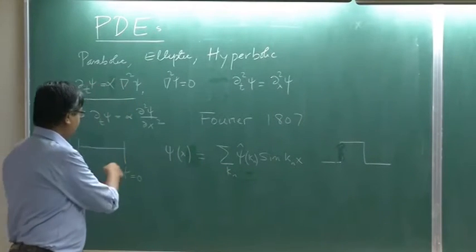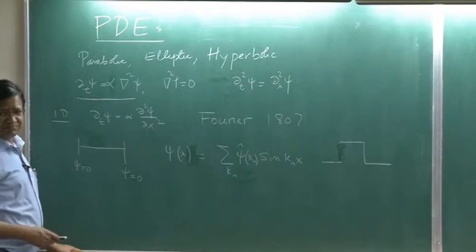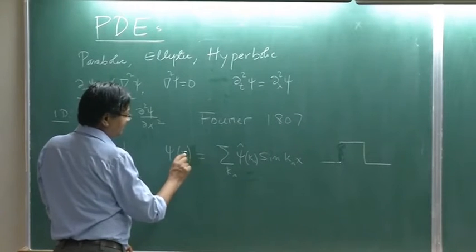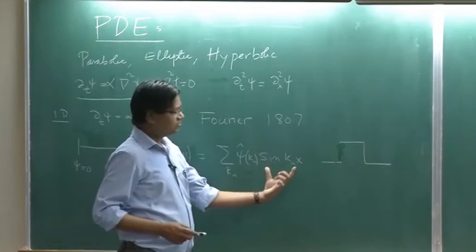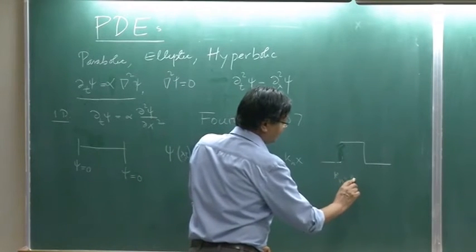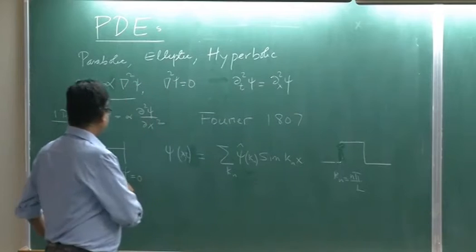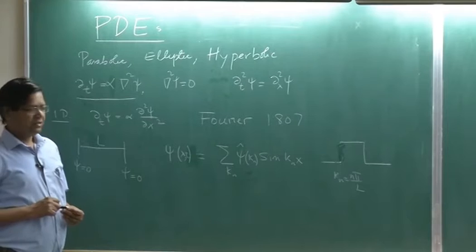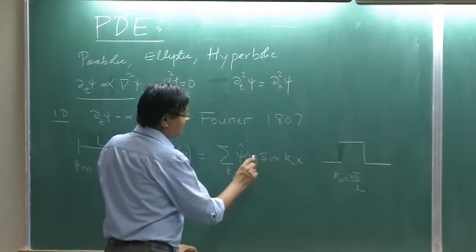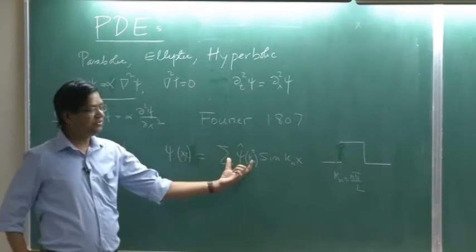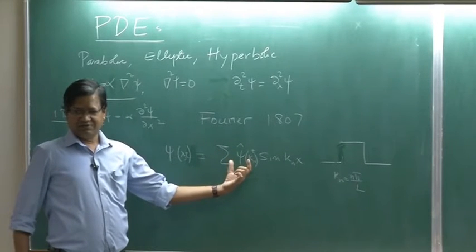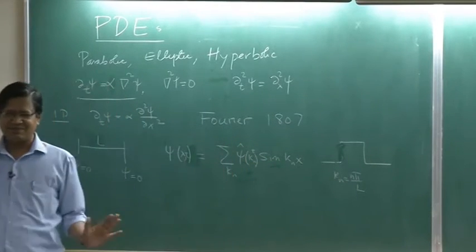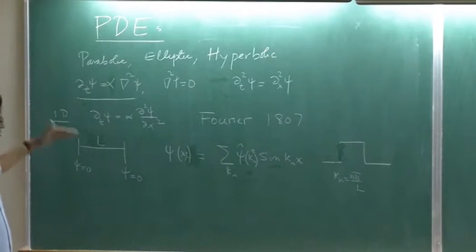Now, using this let us try to solve this equation. What we do is, this function of x and t, now x part I will - one more point, k_n is n*pi/L, L is the box size. This one I will make a function of time, this coefficient. So, x dependence and t dependence are separated out. In some sense, it is a separation of variable, but this way I am going to give the full solution.